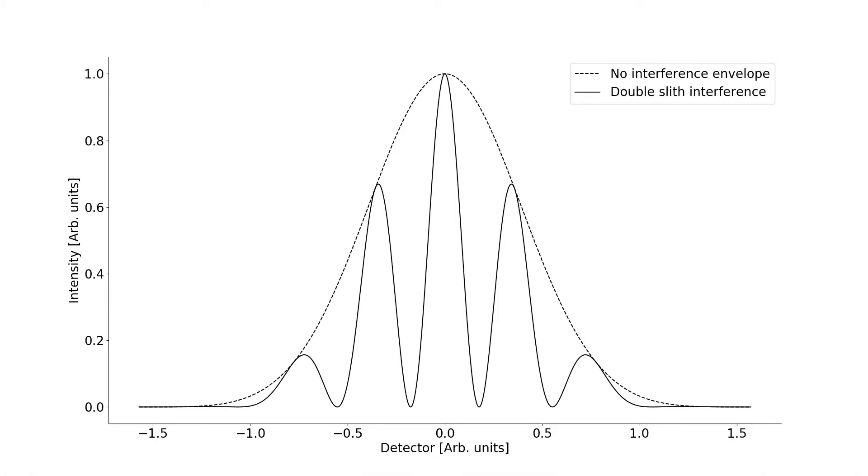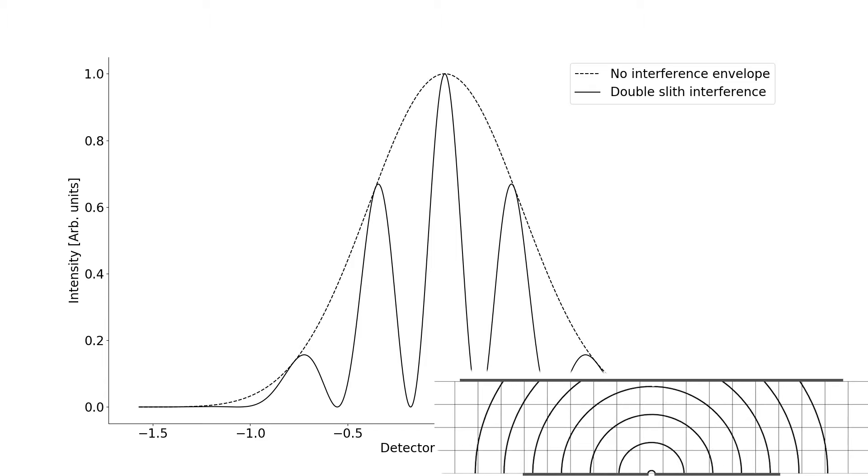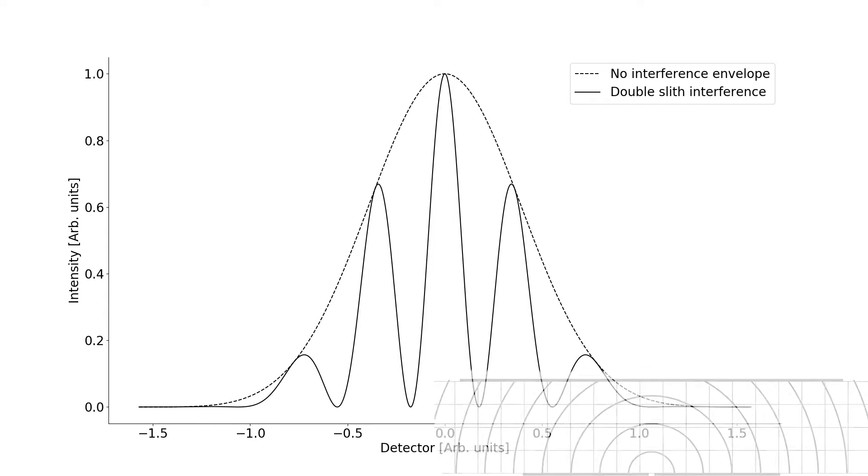So if we again take a look at our measurement device, this is what we will observe. And here the same arrows are again, where we have constructive interference. The dotted line is the intensity of a wave going into one very small slit, as we saw in the beginning.